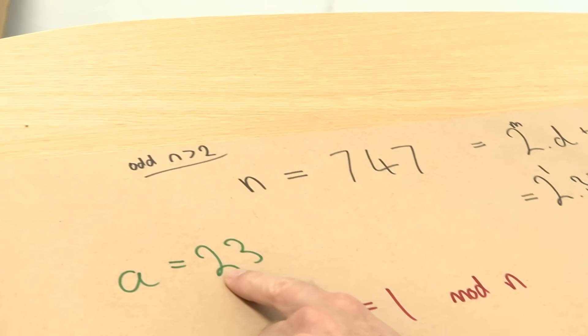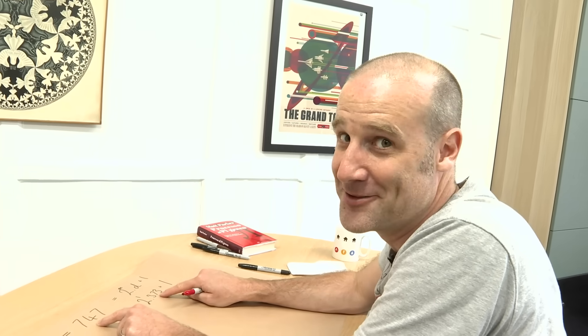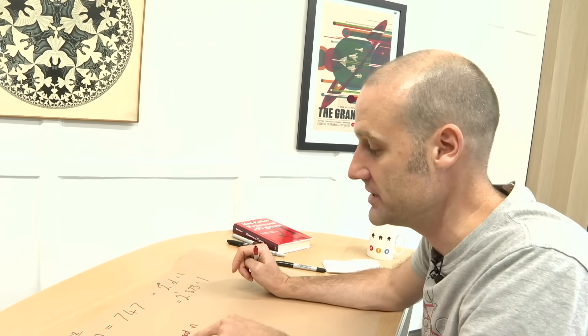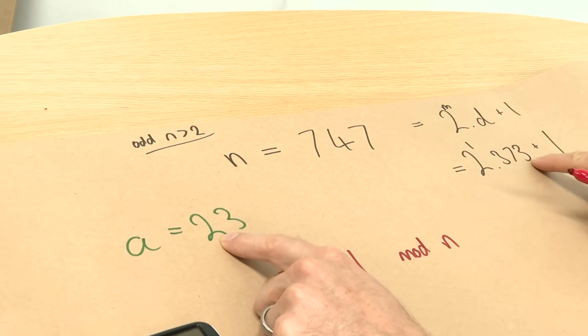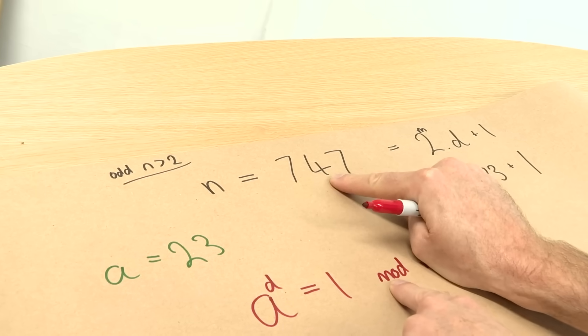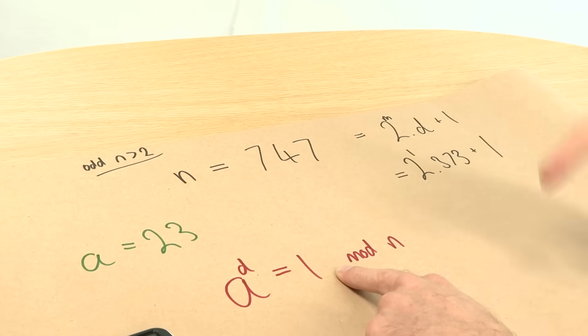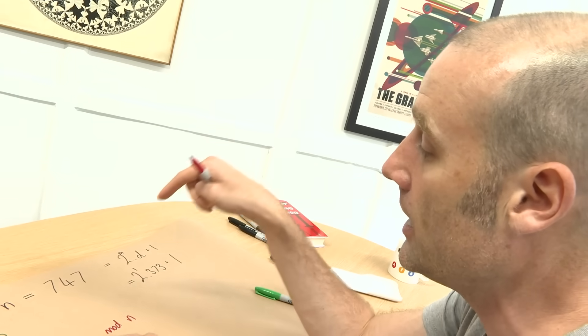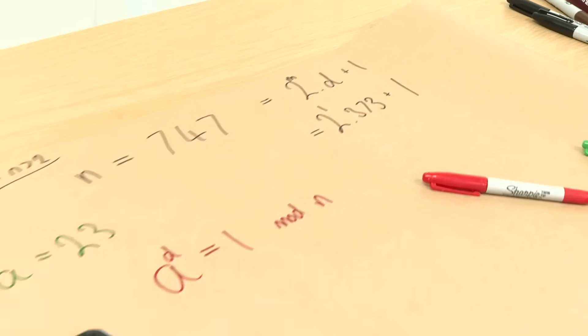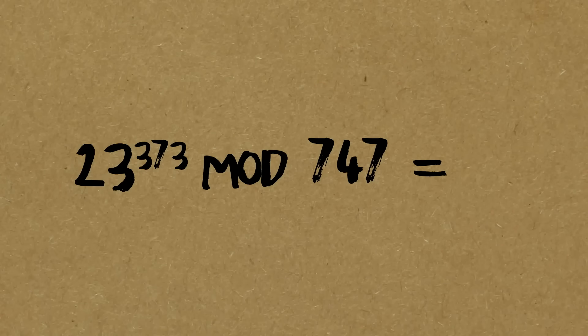And it's either going to say yes or no. And so let's find out, shall we? So we've got to do, oh, we've got to do 23 to the power of 300. Terrible choice, Brady. Sorry. I hate to be retrospectively critical of your choice. Oh my goodness. I'm going to cheat and ask Wolfram Alpha. We did 23 to the power of 373 mod 747, and it was 131.